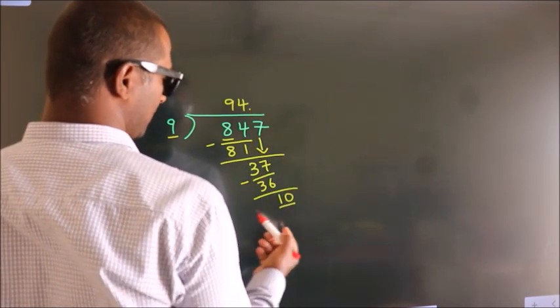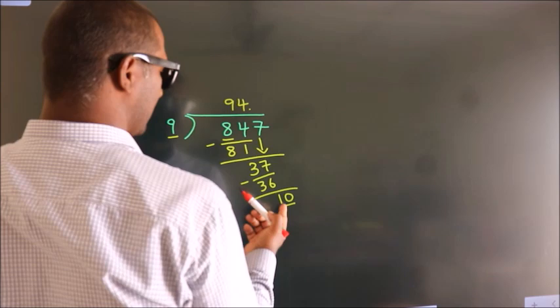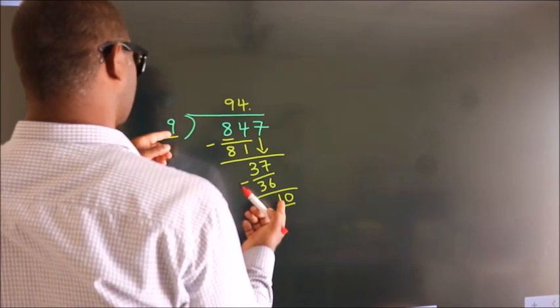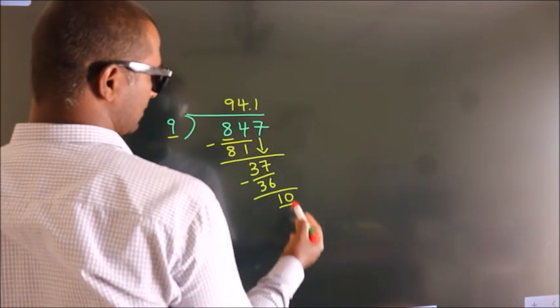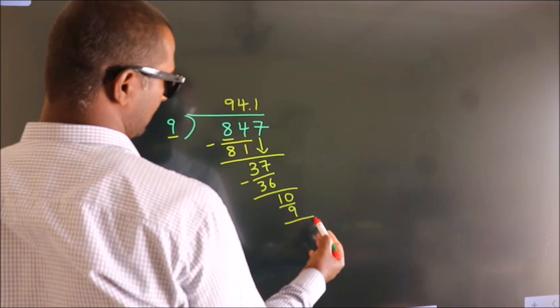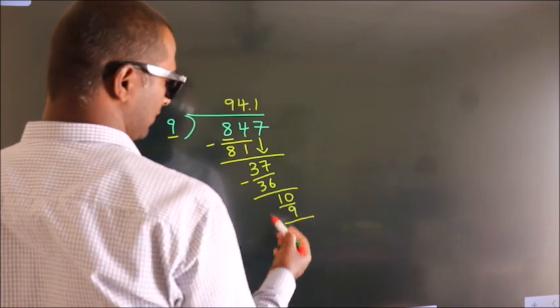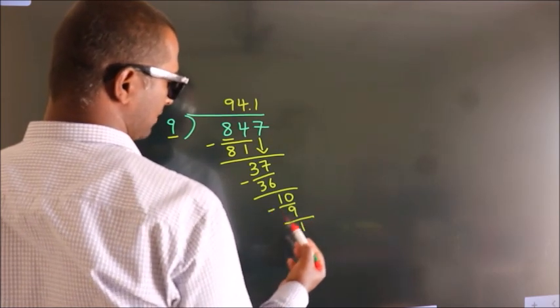So 10. Then, a number close to 10 in the 9 table is 9 times 1 equals 9. Now we subtract, we get 1.